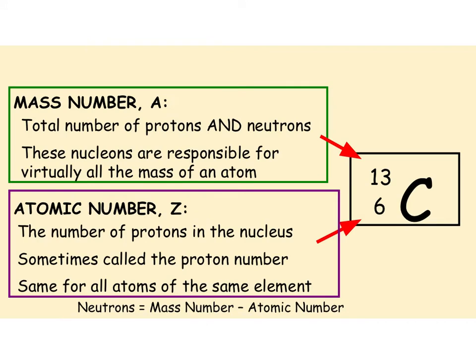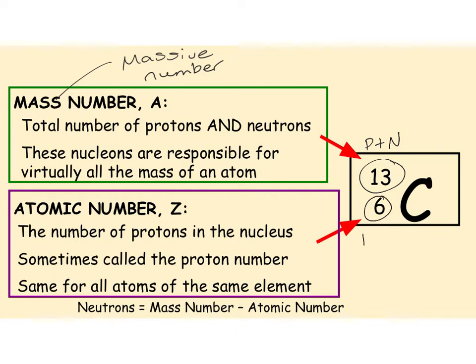Moving on - something we've done before but we're just going to quickly recap. The number of protons and neutrons is the mass number - the mass number is the bigger of the two and it tells you how many protons and neutrons you've got. The atomic number, which is the smaller number, tells you the number of protons. Protons equals electrons, so if you've got six protons you're going to have six electrons.